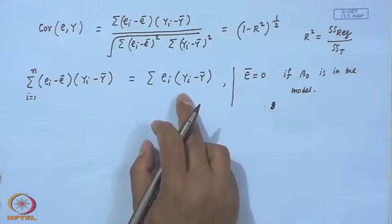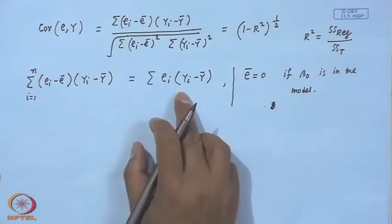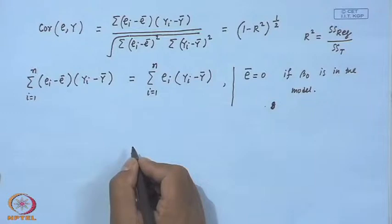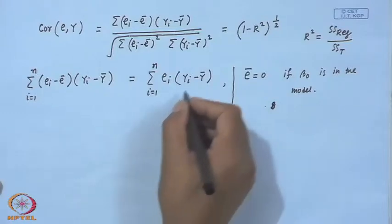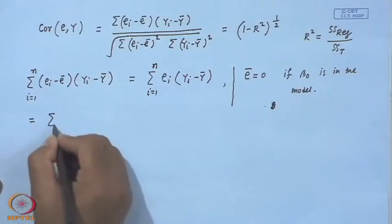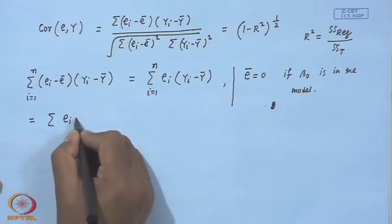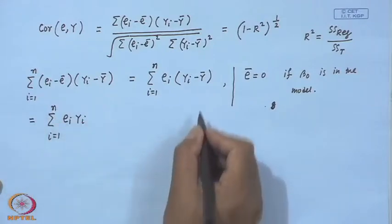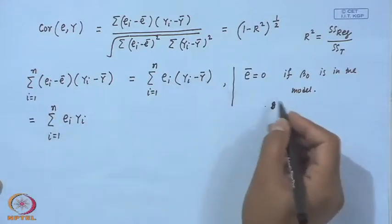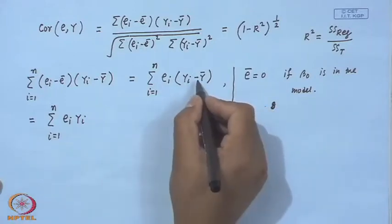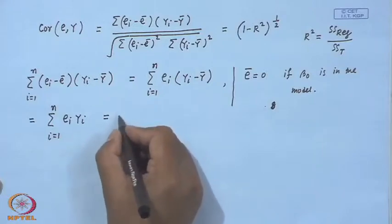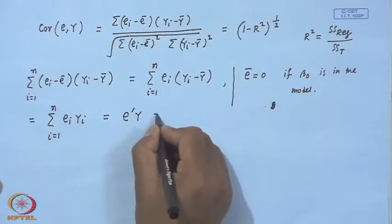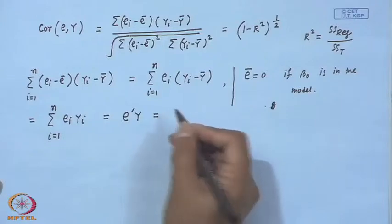So we can write the numerator as summation e_i(y_i minus y-bar) for i from 1 to n. This can be written again as summation e_i y_i for i from 1 to n, because summation e_i equals 0. In matrix/vector notation this can be written as e' y or y' e.